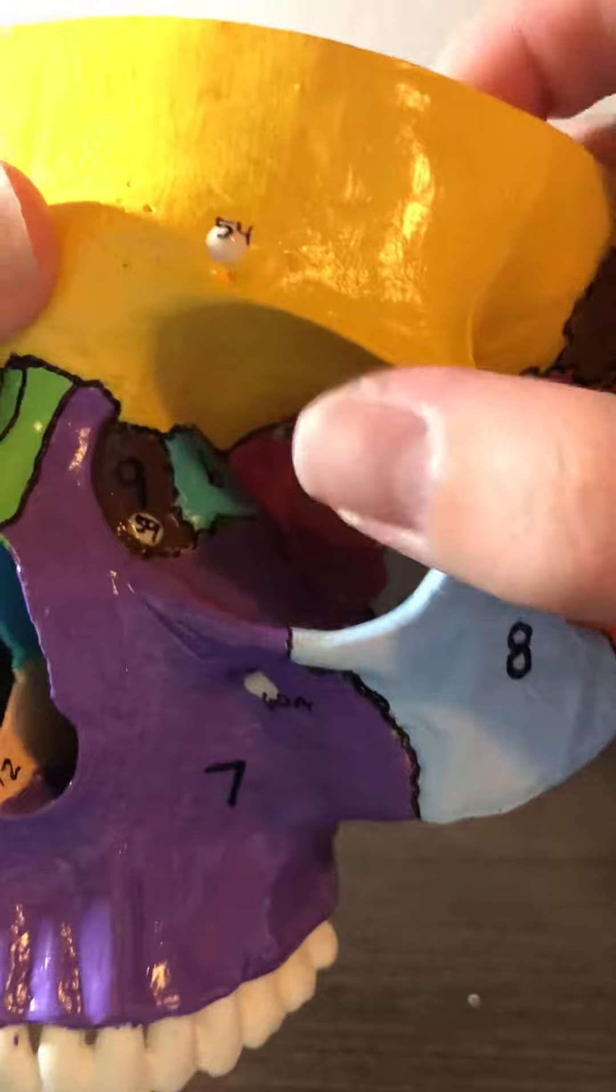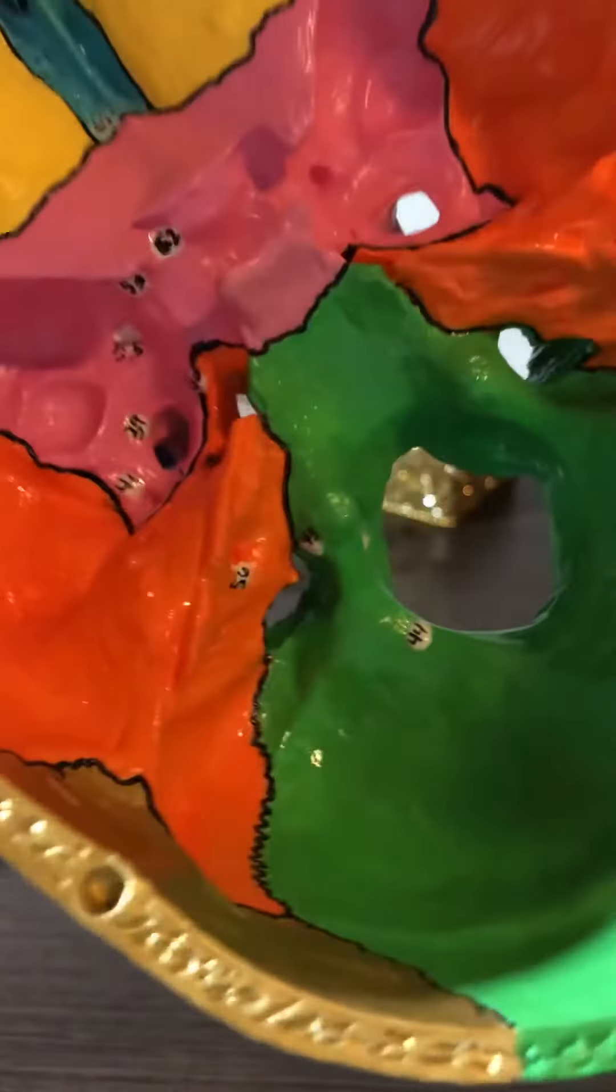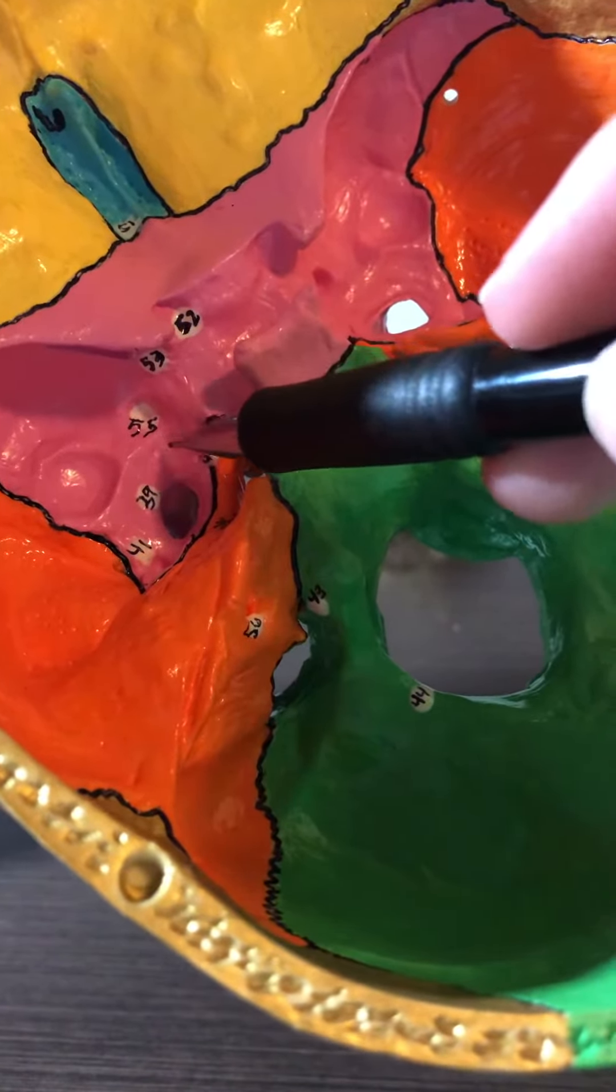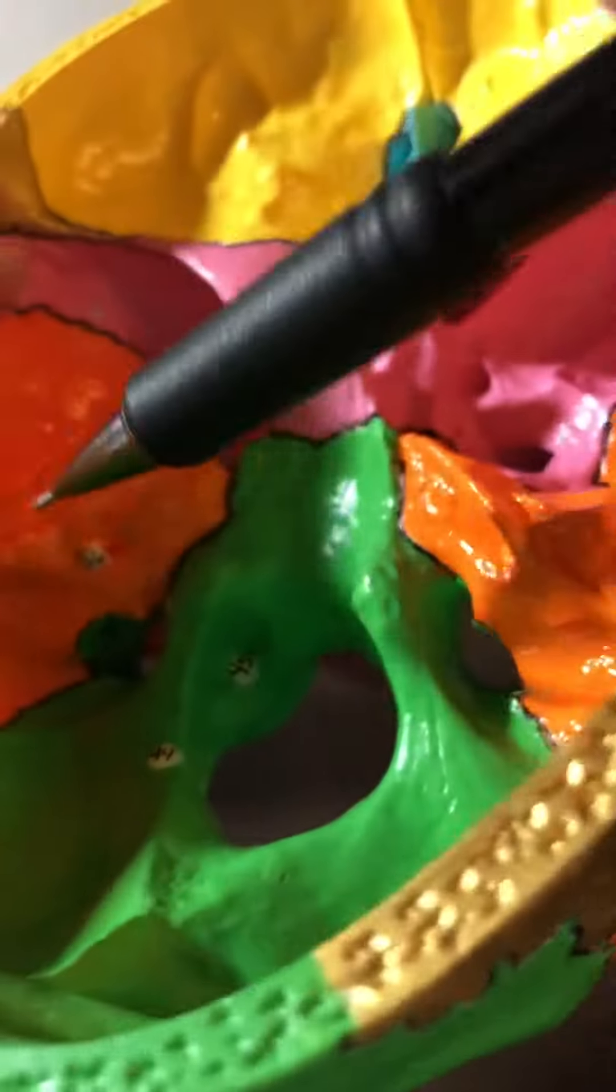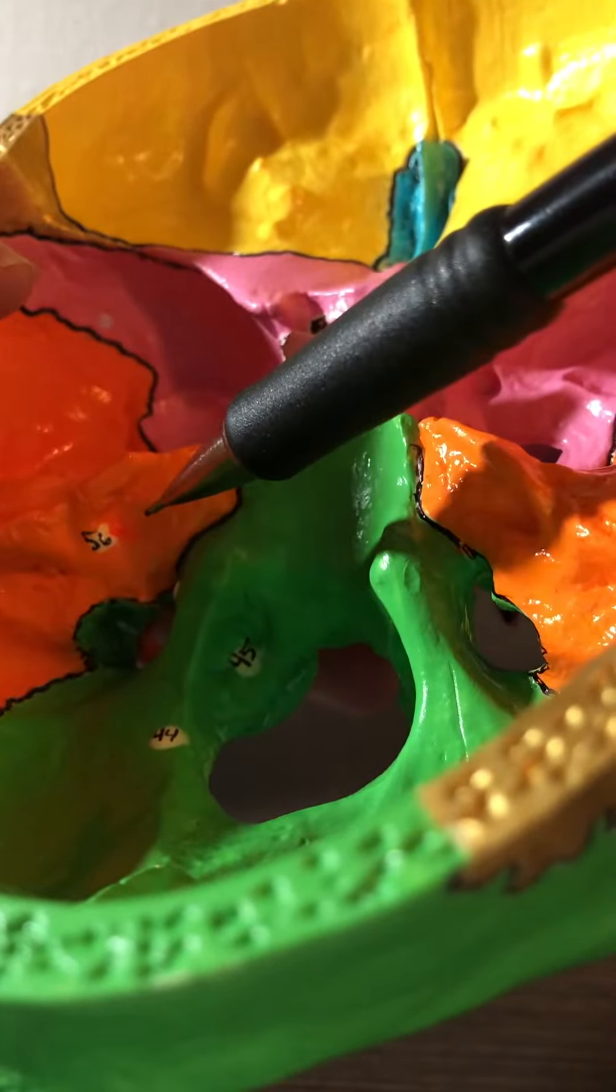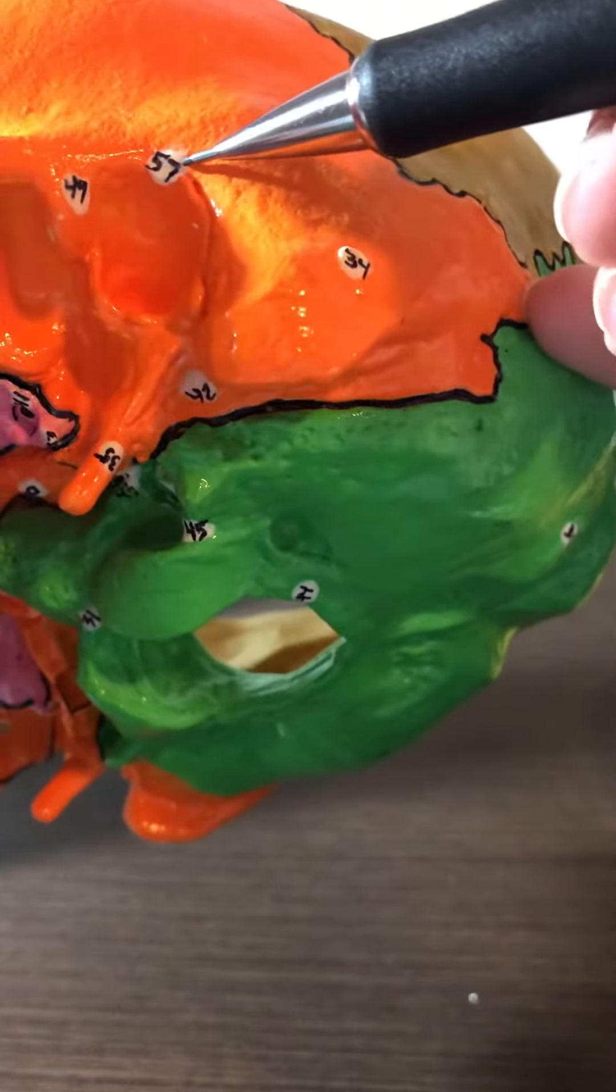Number 55 is the foramen rotundum. Number 56 is the internal acoustic meatus. Number 57 is the external acoustic meatus. Number 58 is the nasal lacrimal foramen.